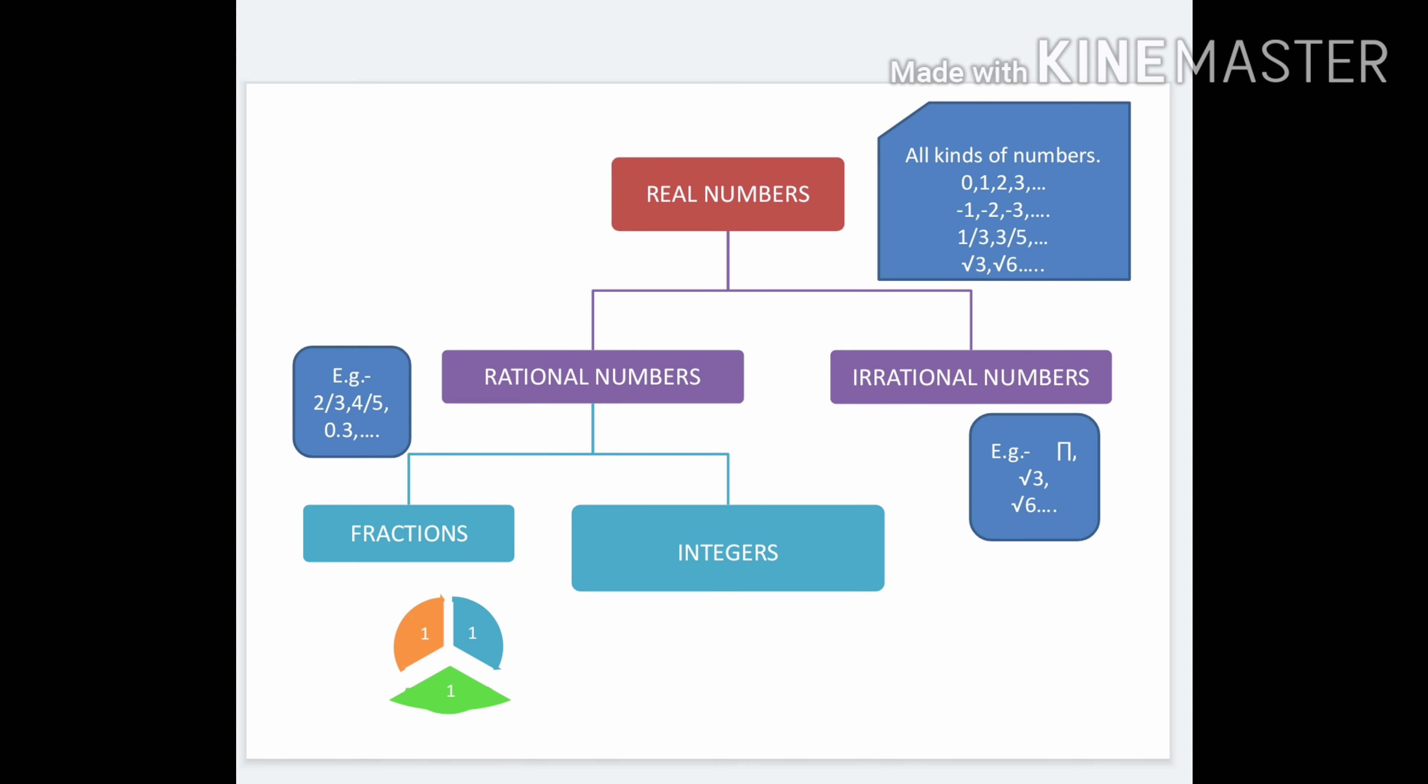For example, 0 to 9, negative numbers like minus 1, minus 2, decimal numbers, fraction numbers, root numbers like root 3, root 6, all types of numbers.